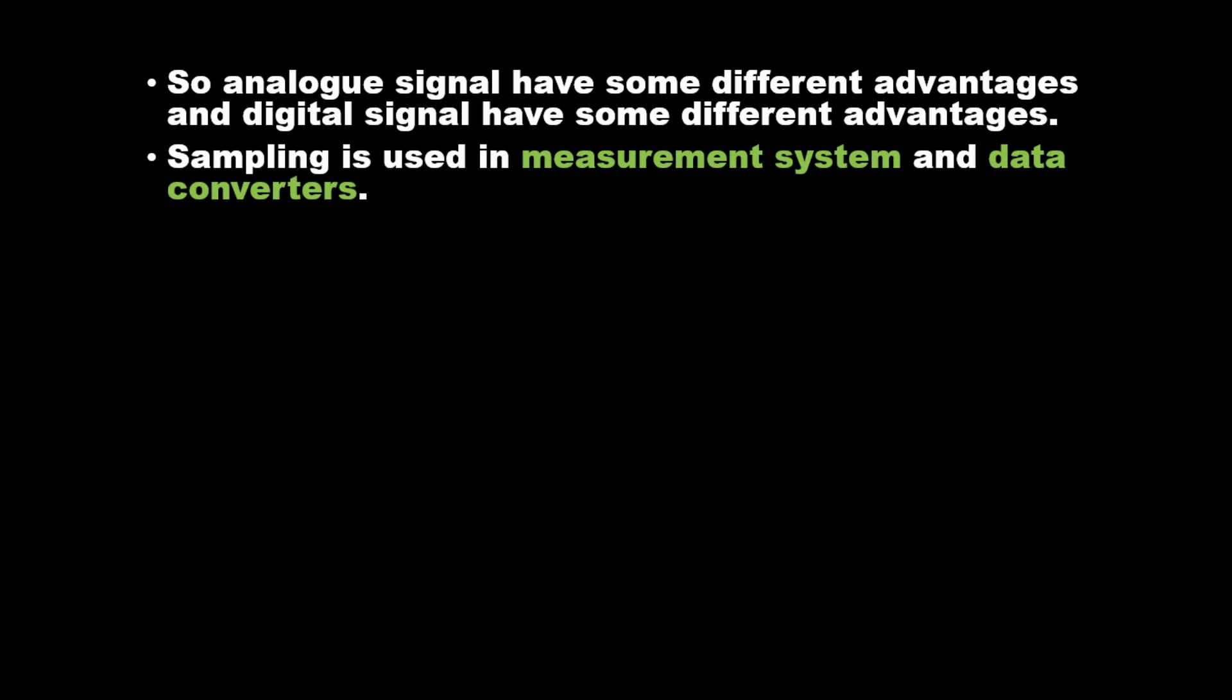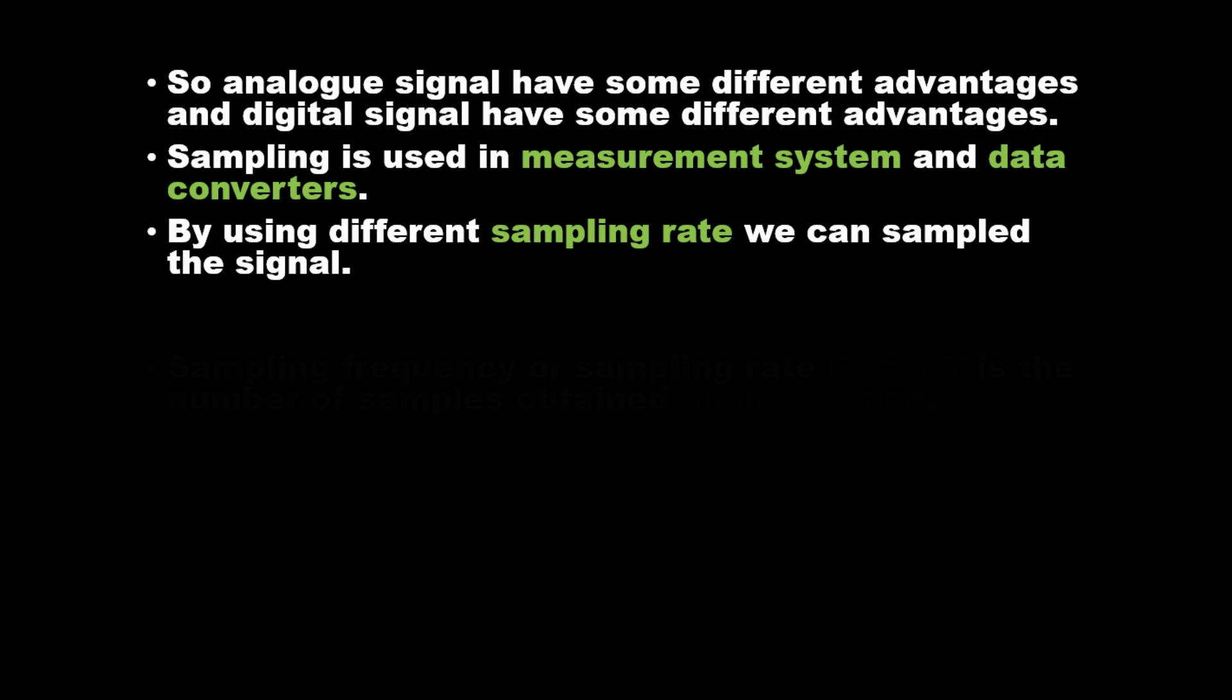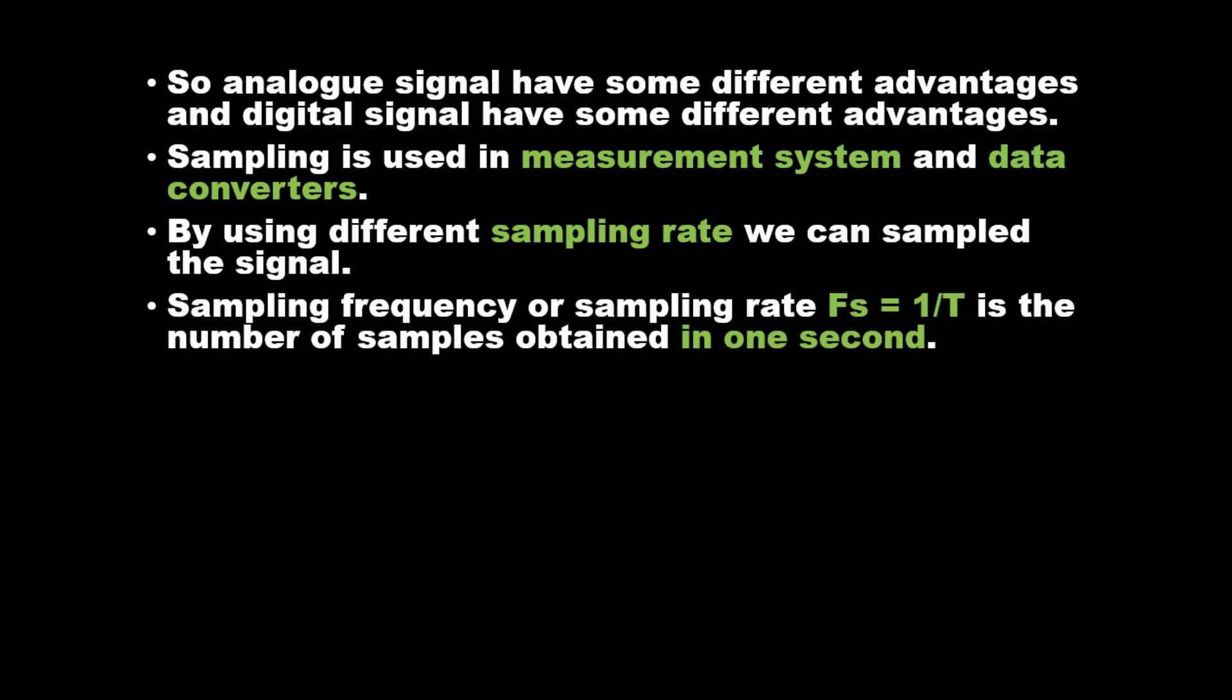Sampling is used in measurement systems and data converters. By using different sampling rates we can sample the signal. Sampling frequency or sampling rate fs equals 1 slash T is the number of samples obtained in one second.